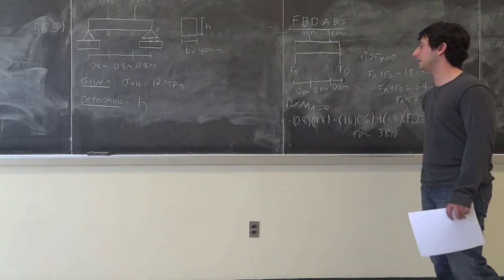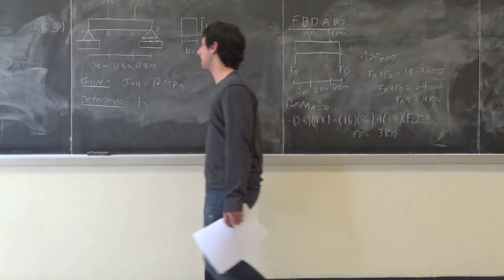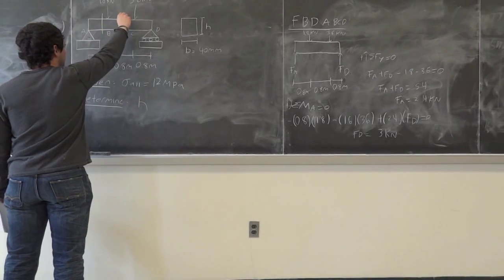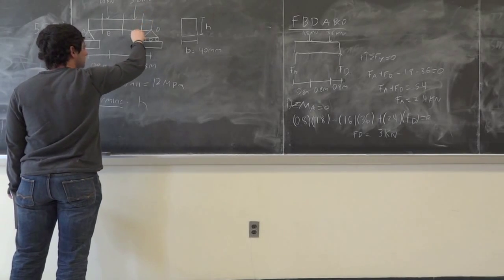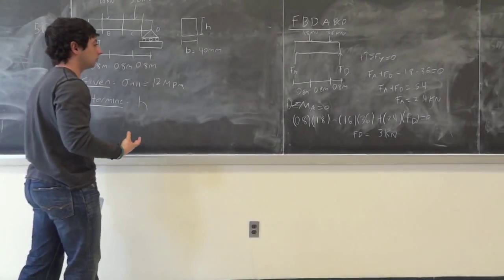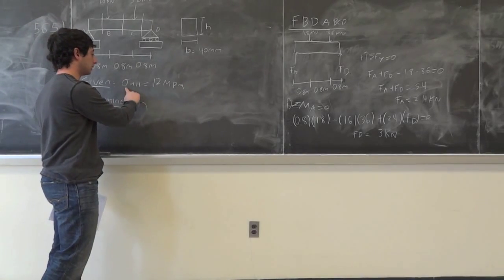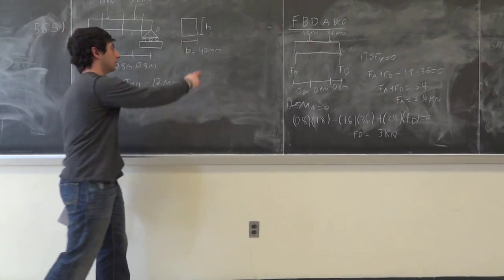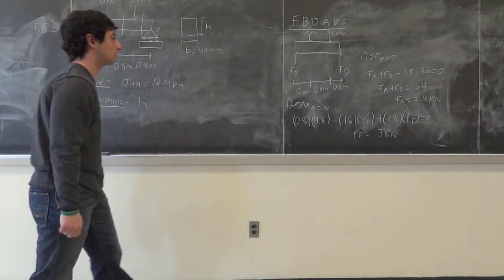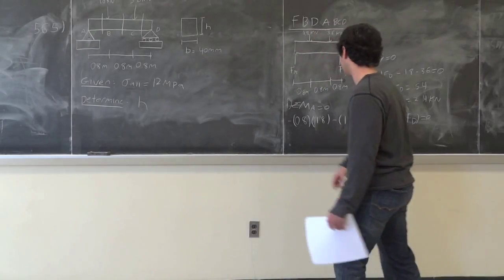Now we have the reactions at A and D. We want to know what's happening in this beam at each section. We want to cut the beam between A and B, between B and C, and between C and D. We want to know where the moment is max, because when we find the stress that's what we're going to use to determine h — we want to find the maximum moment in this beam. So we're going to draw three free body diagrams.